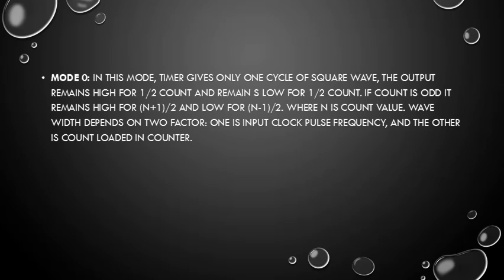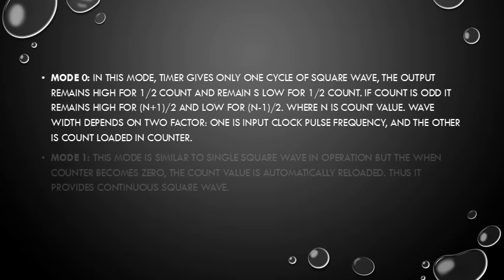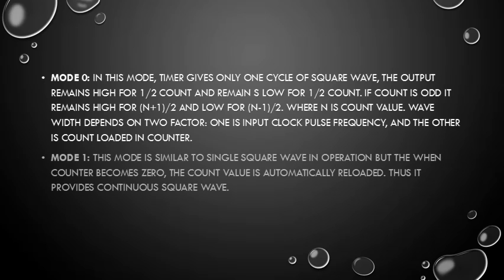The wave width depends on two factors: one is the input clock pulse frequency, and the other is the count loaded in the counter. Mode 1: this mode is similar to the single square wave in operation, but when the counter becomes zero the counter value is automatically reloaded, thus it provides a continuous square wave.